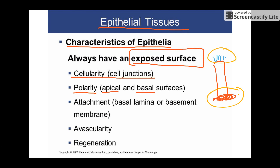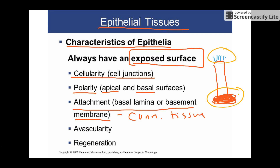They are also always attached to connective tissue. This is probably the slide where you should be writing the most things. So you want to make sure you're defining these things: cellularity — tightly packed, almost no space between the cells; polarity — they've got the top and bottom surfaces; attachment — they always have this basal lamina or basement membrane, which is connective tissue underneath, almost like an anchor. So all of that would be the connective tissue underneath.